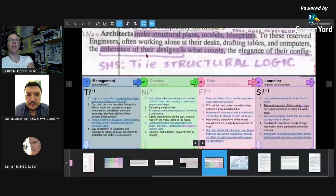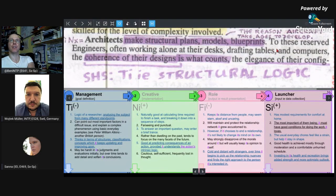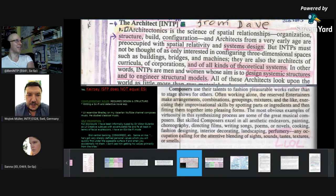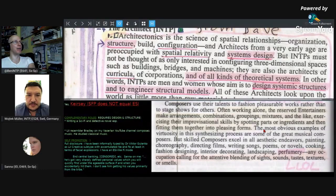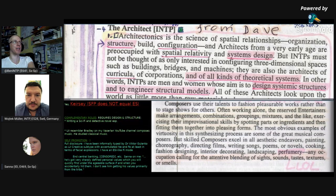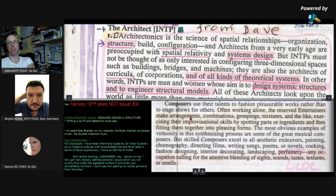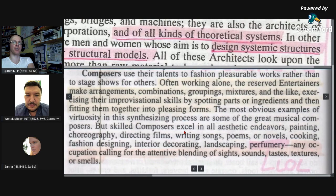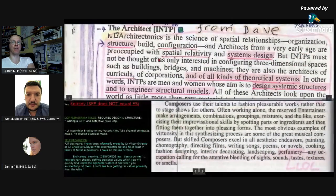INTPs are men and women whose aim is to design systemic structures and engineer structural models. Architects make structural plans, models, blueprints — these reserved engineers often work alone at their desks, drafting, telling the computers the coherence of their systems, and the elegance of their configurations. Do INTPs agree they are good at that? They want to be. Composer — the predisposed role of ISFP in Keirsey, Bates and Nardi — when I write, I have to switch to this role. These roles are very complementary because you're going from design to composer.